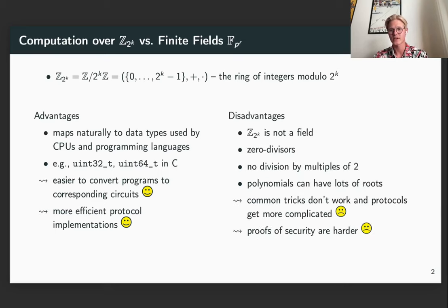It has several disadvantages however. Z2K is not a field, so you have zero divisors, meaning that polynomials can have lots of roots as well. This means that common tricks don't work and protocols get more complicated, but also the proofs of security can be quite a bit harder.